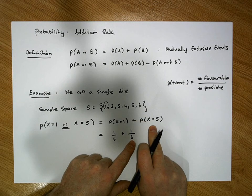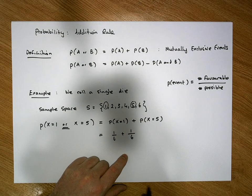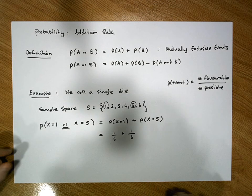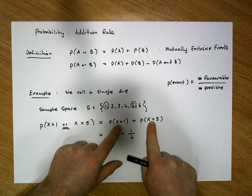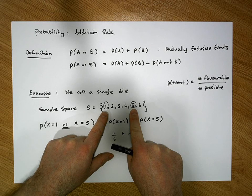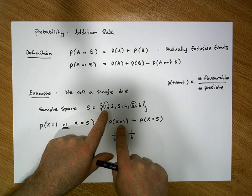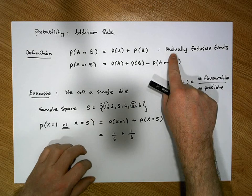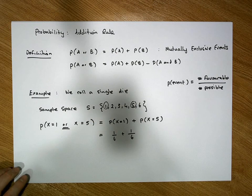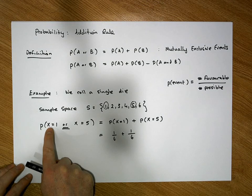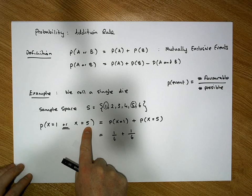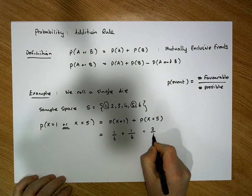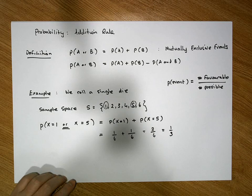When we circle the five to indicate we've counted it, we can see that the two events share nothing in common — there's no overlap between the favorable outcomes for the first event and the favorable outcomes for the second event. So they are mutually exclusive. Therefore, the probability of rolling a one or a five is simply 1/6 plus 1/6, which equals 2/6 — a one in three chance.